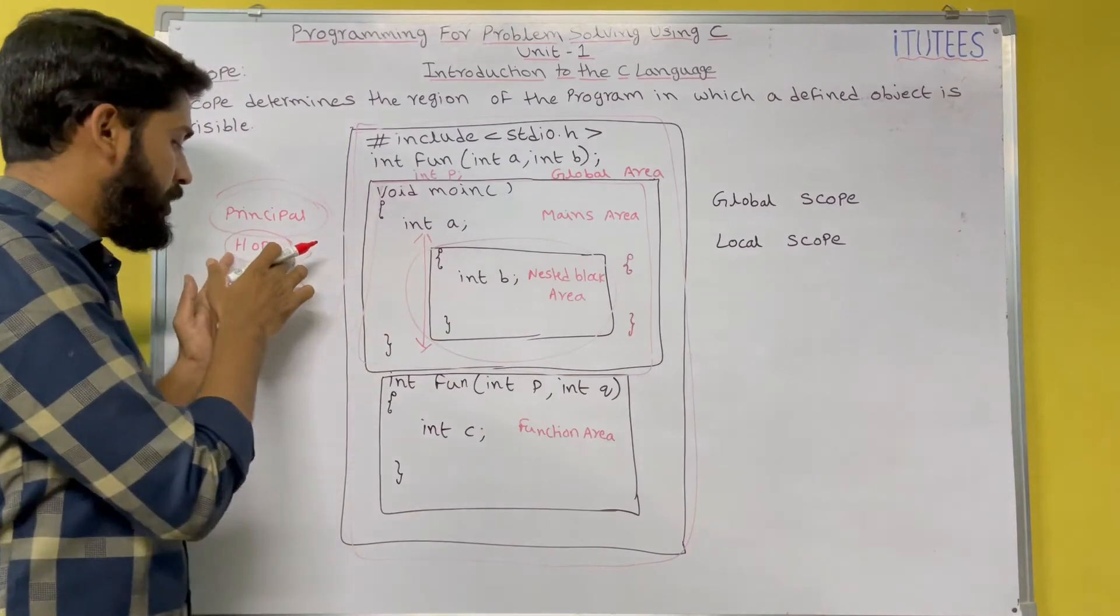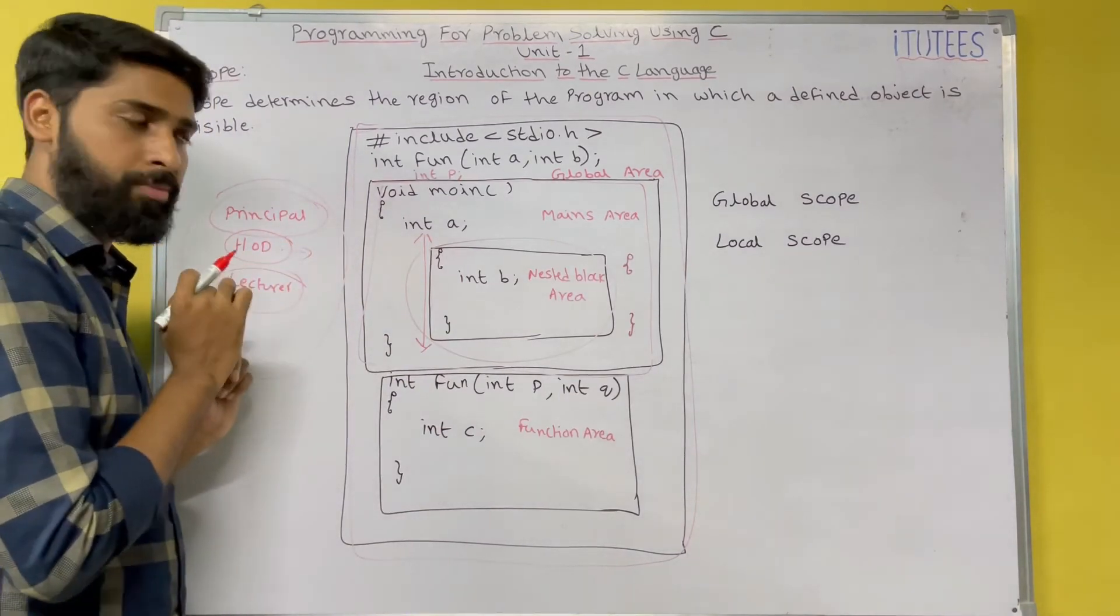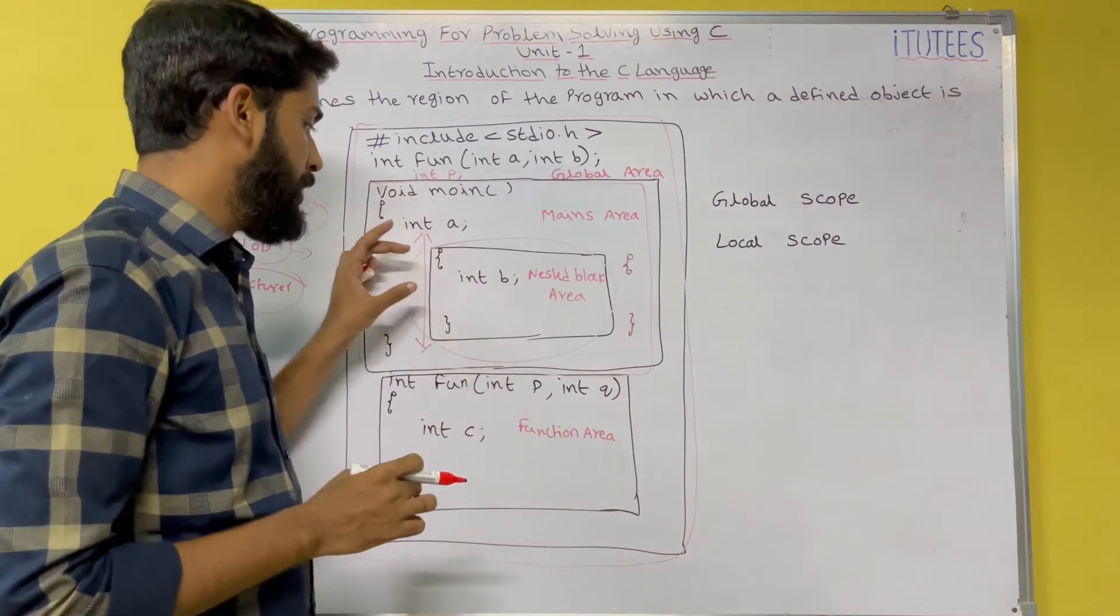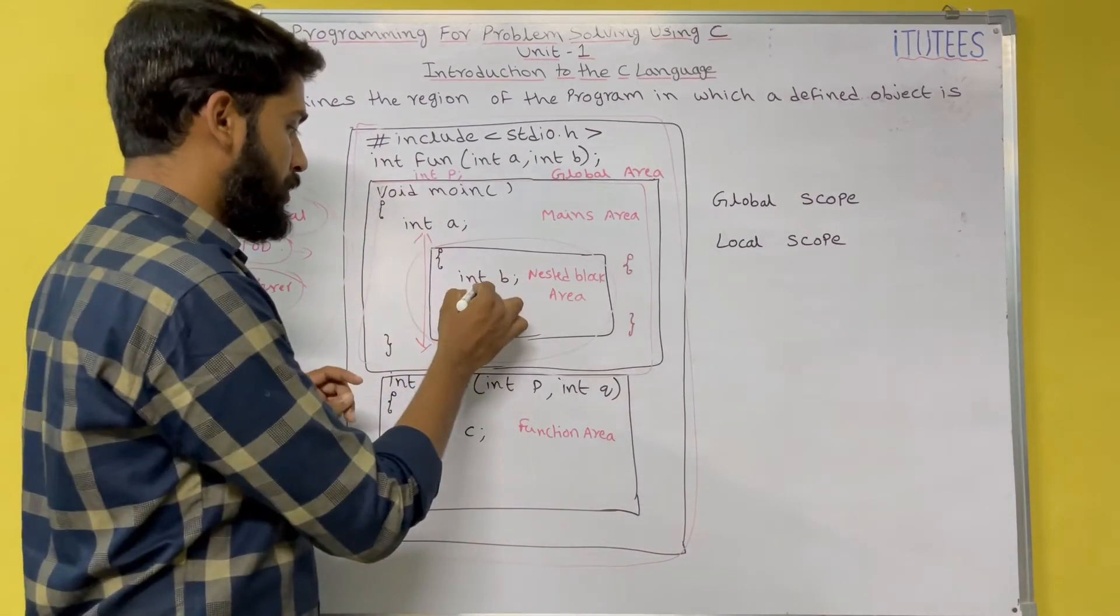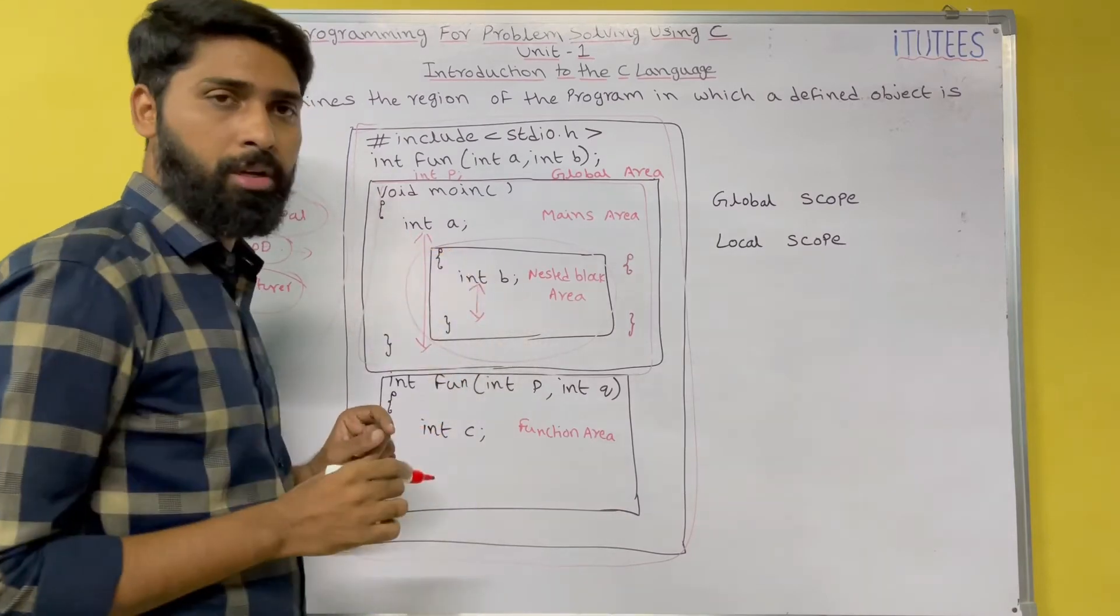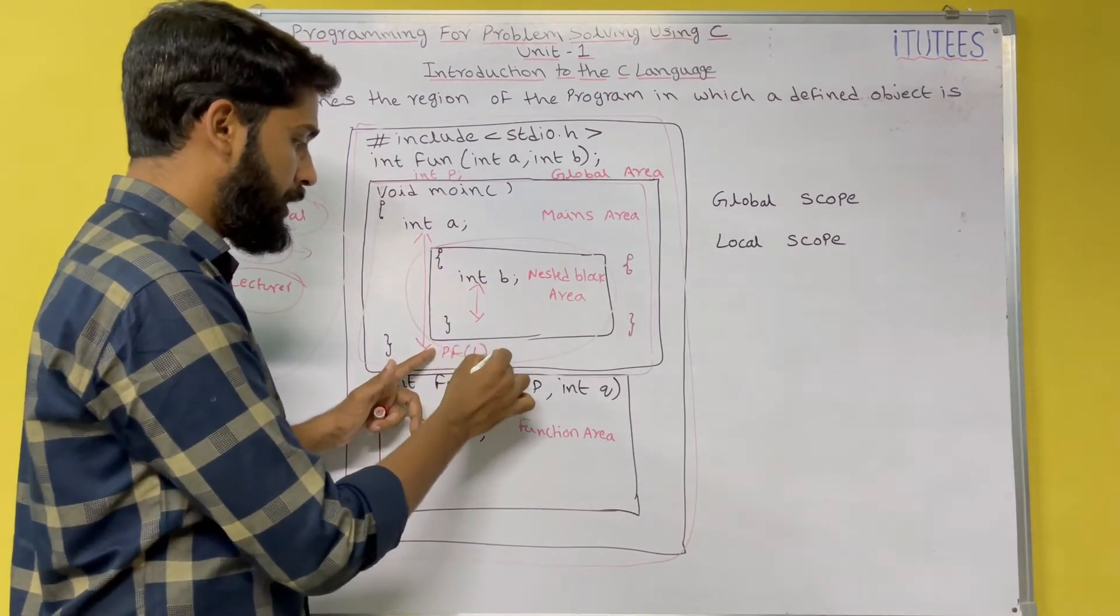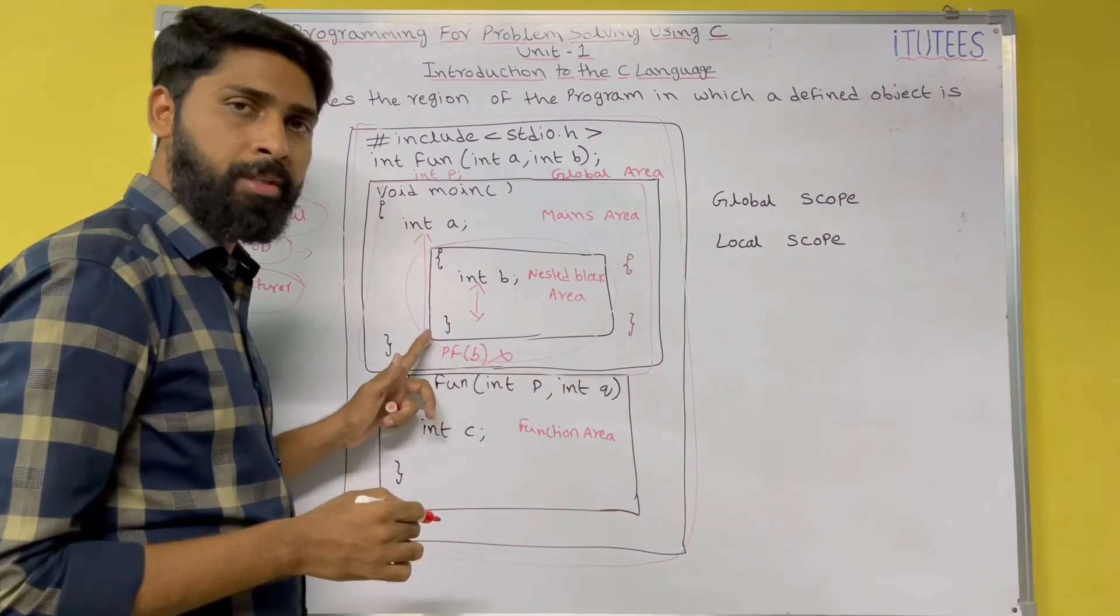Similarly, so HOD is known to the class also. And similarly, int b is defined in the nested block. So the scope of the b is within this block only. So if outside the scope, if I want to print this b, then it returns an error.